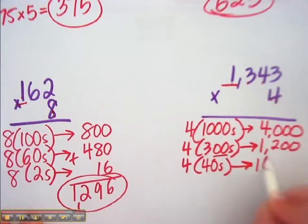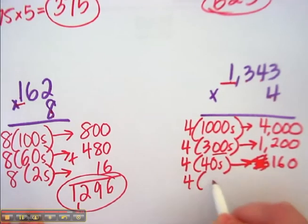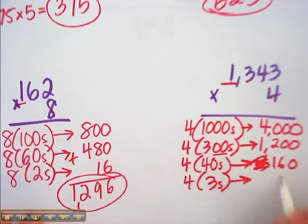4 times 4 is 16. Oh, look. I'm not aligning it there. 16. And then last is 4 threes. And that's 12.